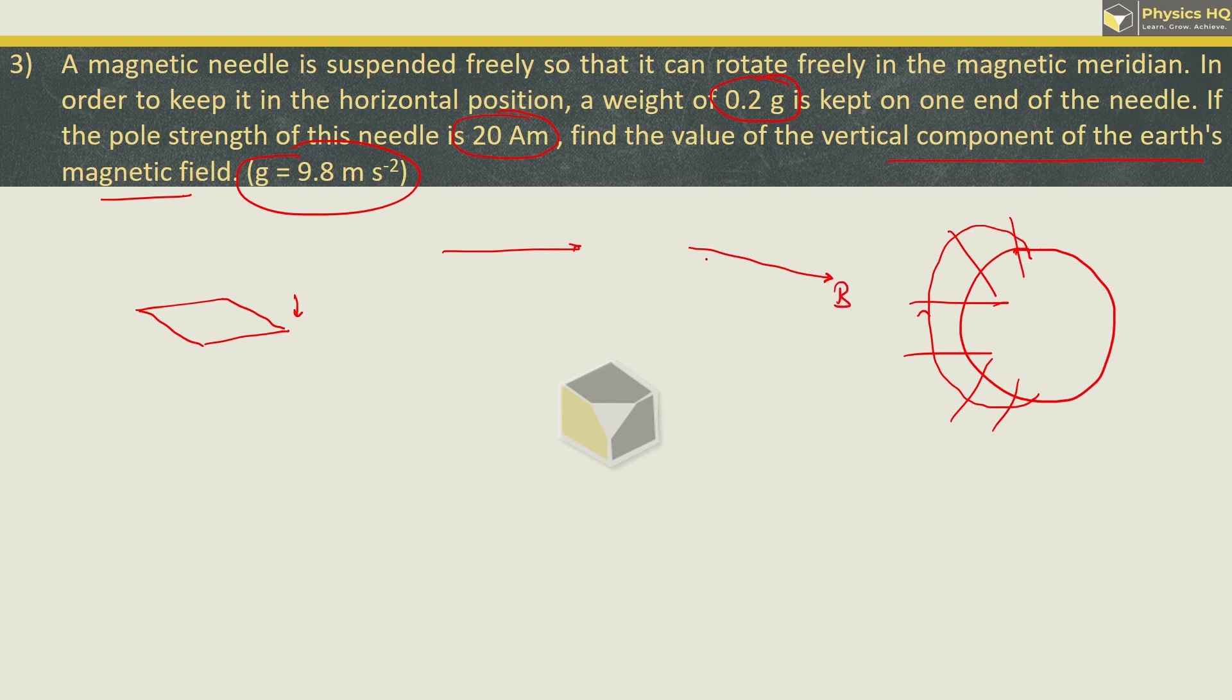So, we can resolve the magnetic field in two components: horizontal component and vertical component. And we are supposed to find out what is this vertical component value.